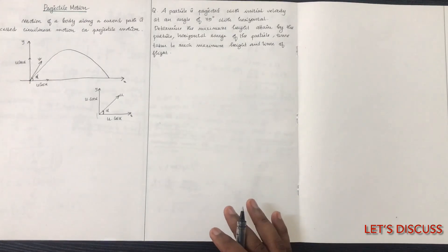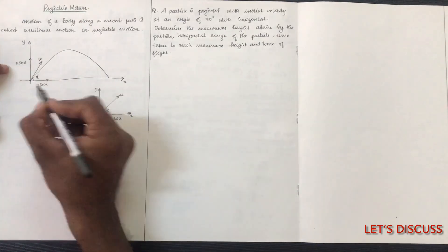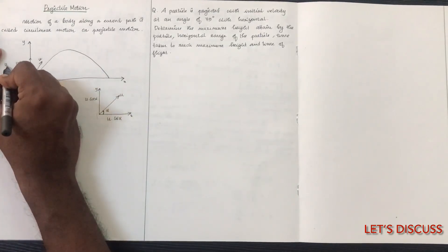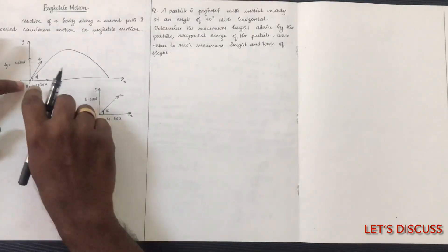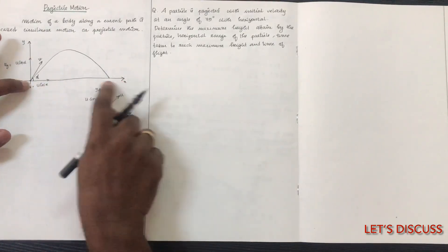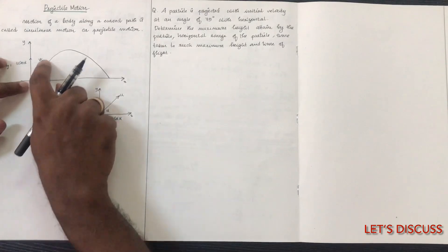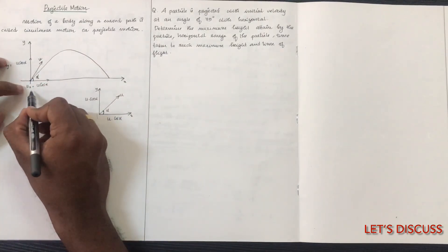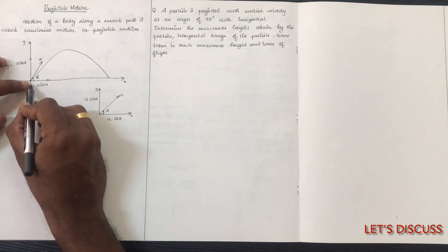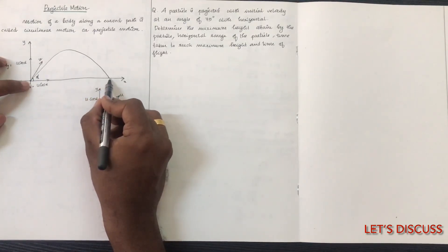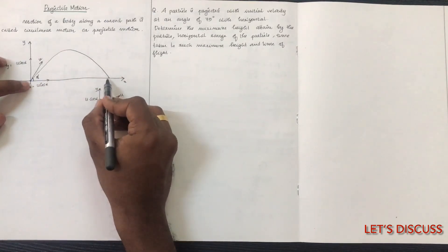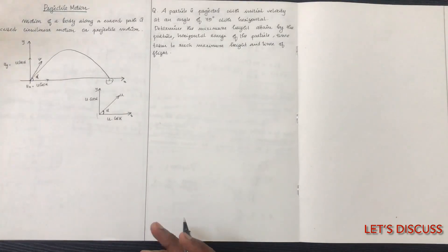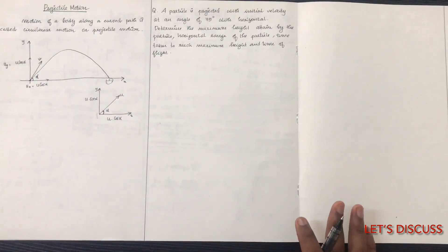We denote ux equals u cosine alpha and uy equals u sine alpha. These are the two components. The velocity of the horizontal component is always constant. This is the key concept we need to understand about projectile motion.